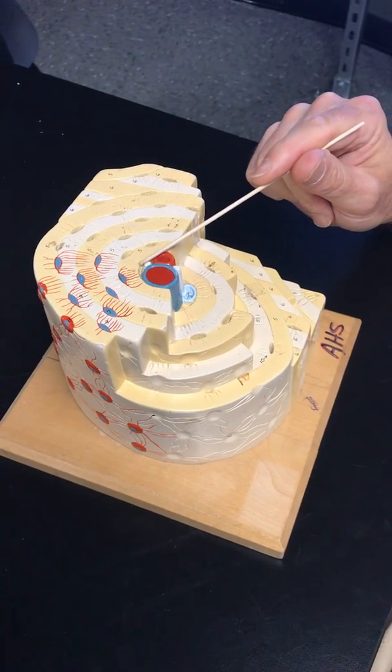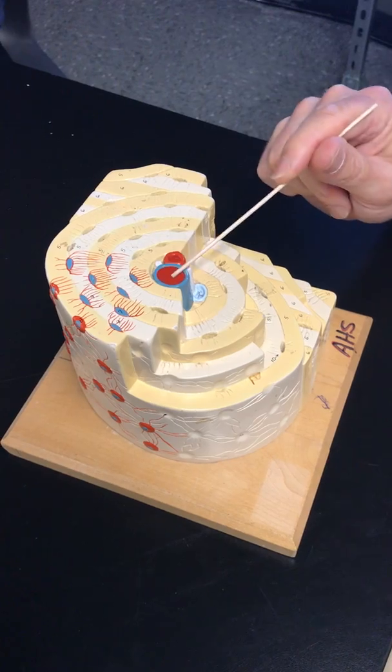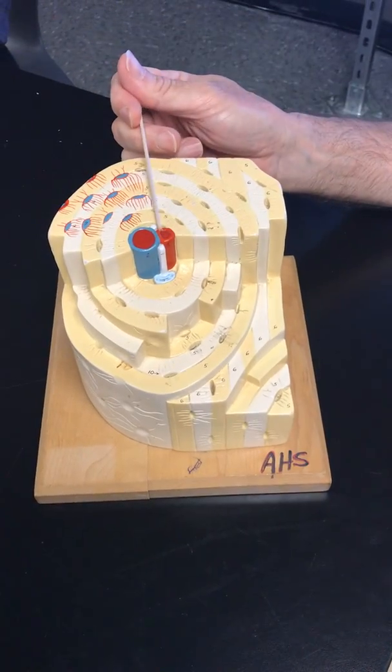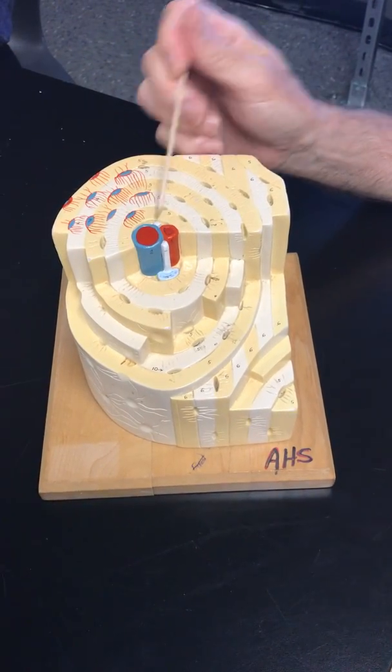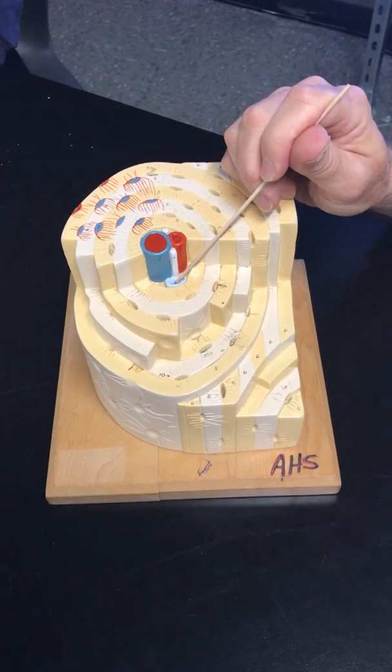We have the central canal which contains vein, artery, two nerves, and a lymphatic vessel.